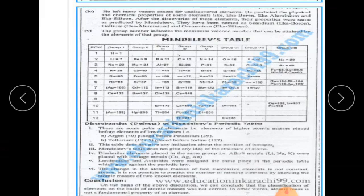He named the predicted elements: eka-scandium (later gallium), eka-boron, eka-aluminium (germanium), and eka-silicon. The group number indicates the maximum valence number — that is, it suggests how many valence electrons an element has.